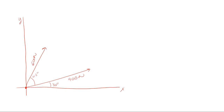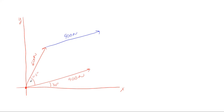This is where we start utilizing the parallelogram law. We have to draw a parallelogram out of these two forces. The first step is that you're going to take each force, copy it, and paste it at the end of the other force. So we are going to copy this 900 Newtons of force and paste it at the end of the 600. Then we repeat that process for the 600 — take it, copy it, and paste it at the end of the 900 Newtons of force.